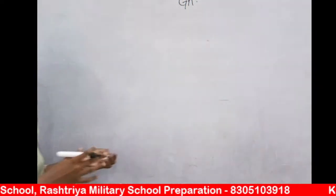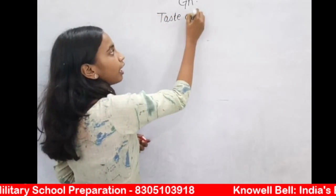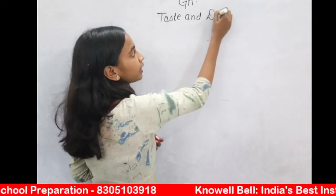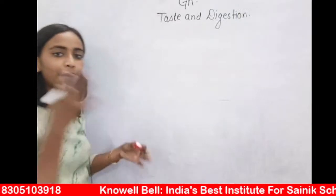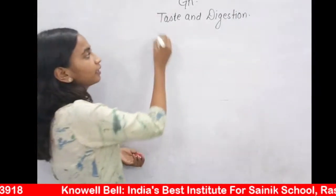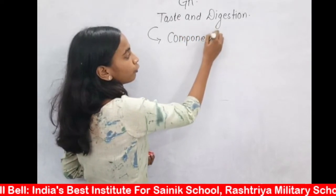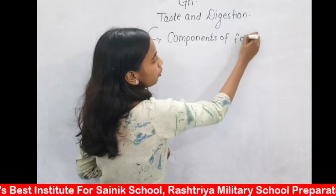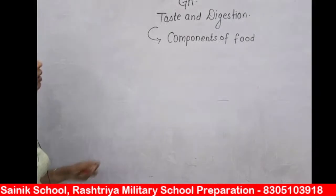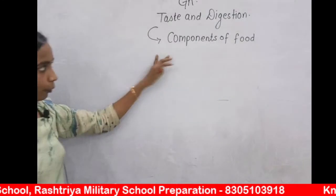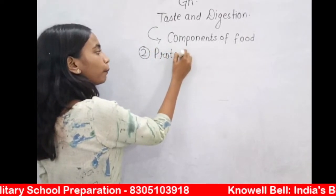We are mainly doing the science portion. The topic is Taste and Digestion and we are studying it in detail. We already completed carbohydrates, and today we have to start with the second component of food — protein. A quick question: which component of food is responsible for providing energy to the body? The answer is carbohydrate. Also, fruits are sweet in taste due to the presence of sugar, which is a carbohydrate.